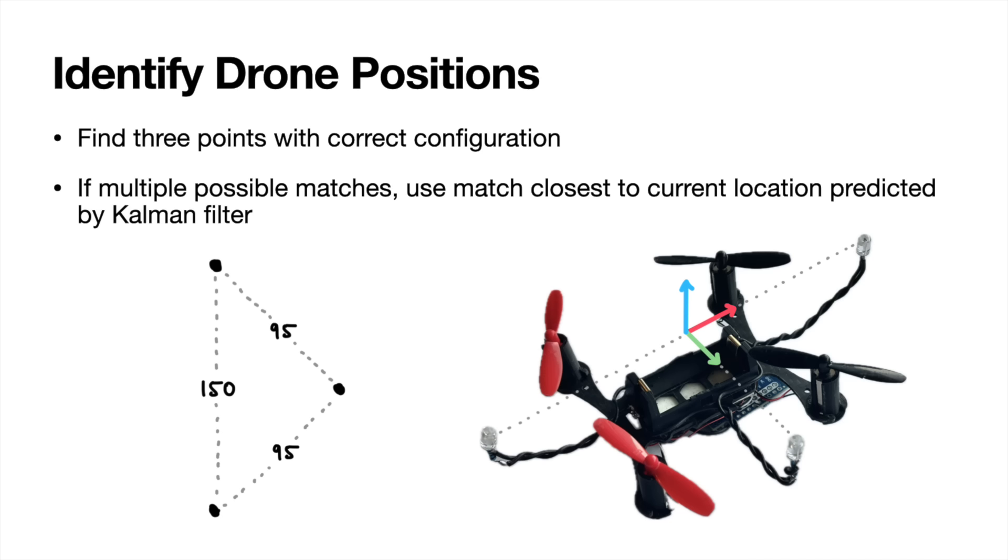So we can simply scan through our world points to find this triangle. If we find multiple matches, we can then use the one closest to the current location predicted by our Kalman filter.